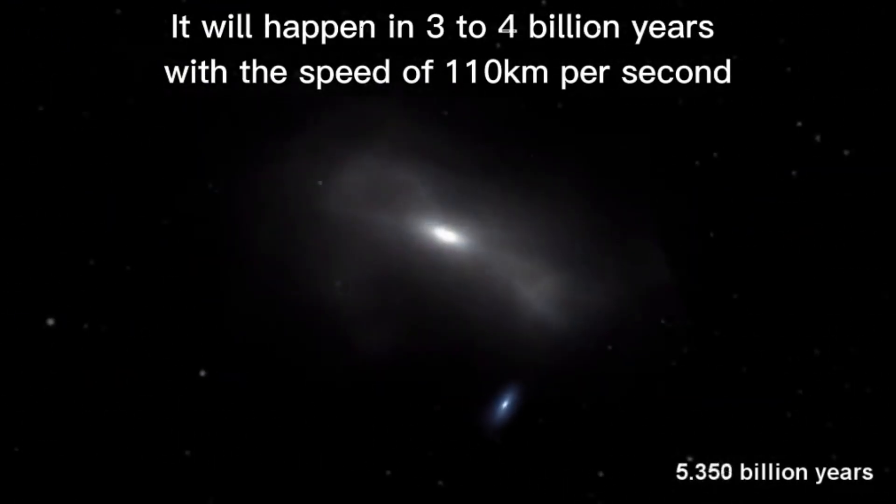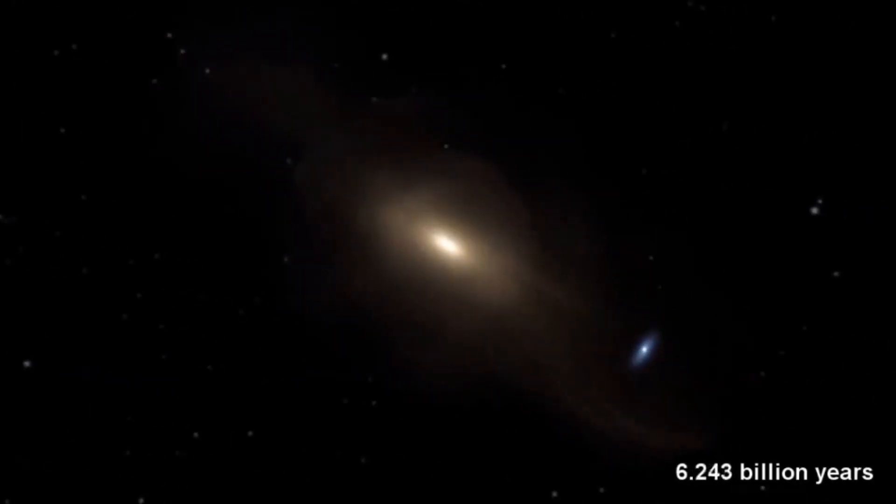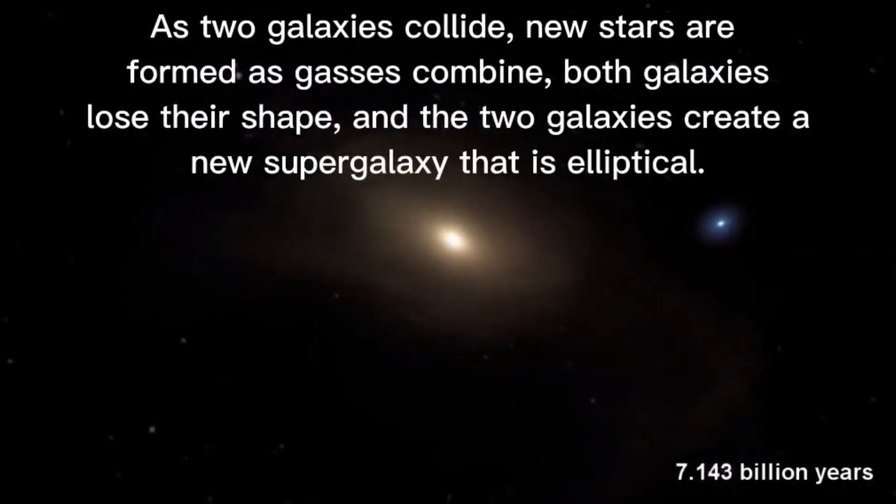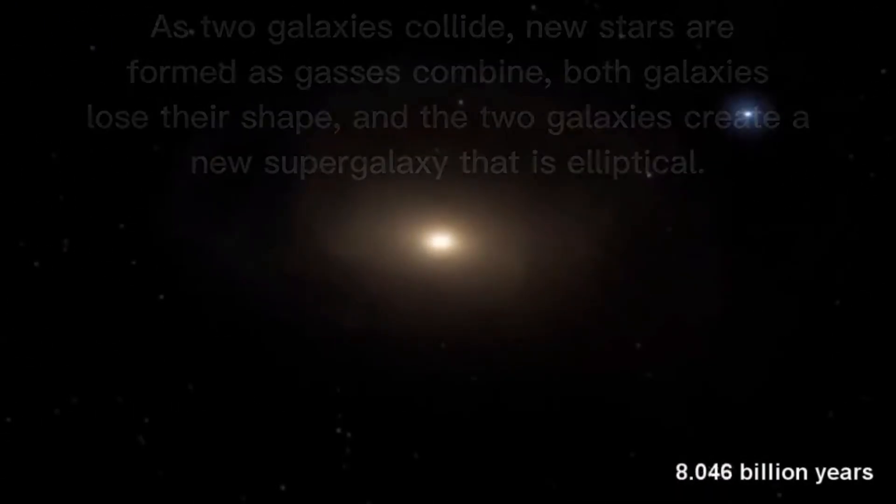It's visible to the naked eye from Earth, meaning when you look at Andromeda, you're seeing light that left before humans even existed. That light has travelled 2.5 million years, when Earth's first ancestors were just beginning to evolve.